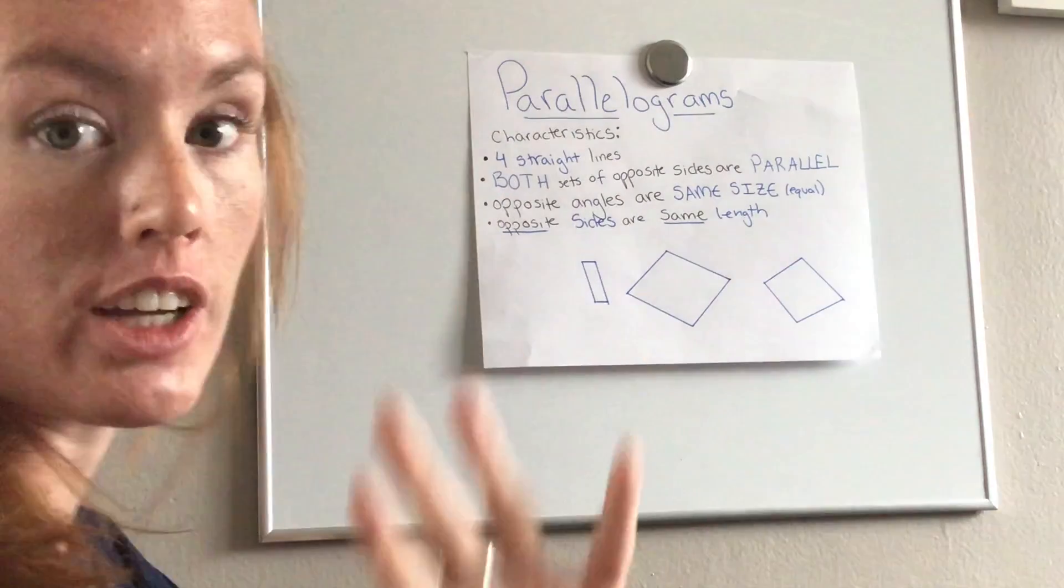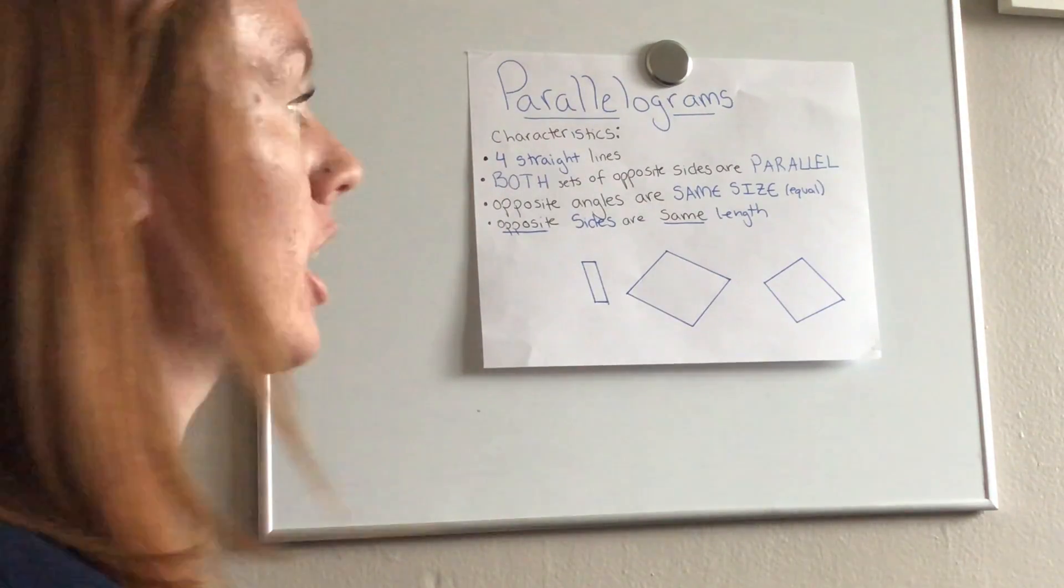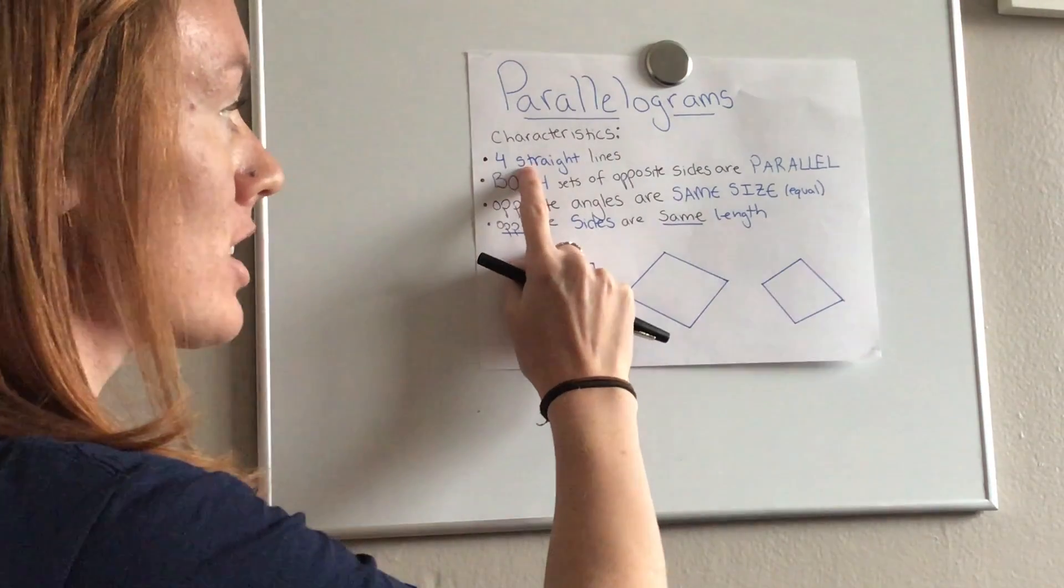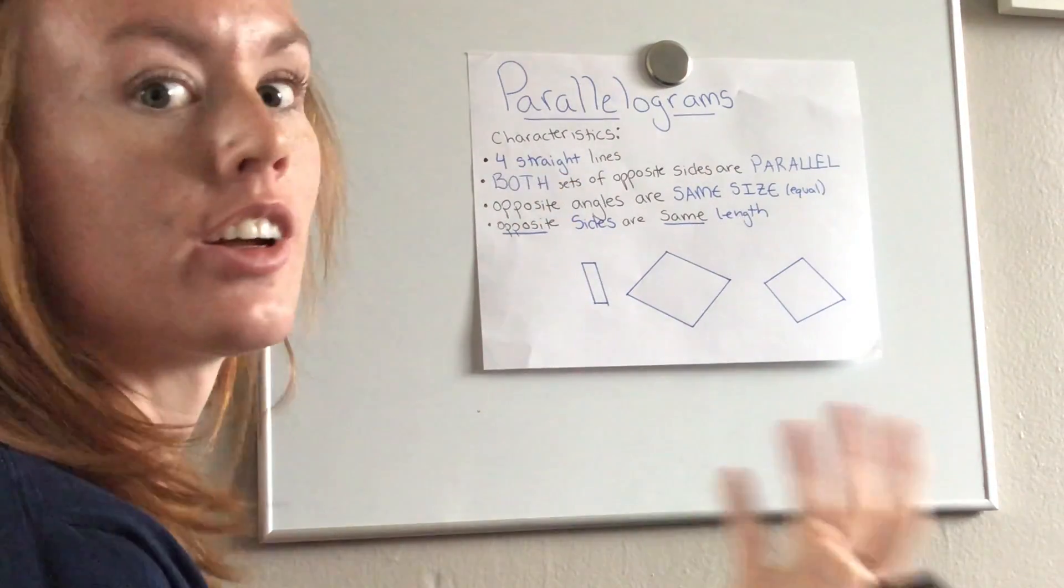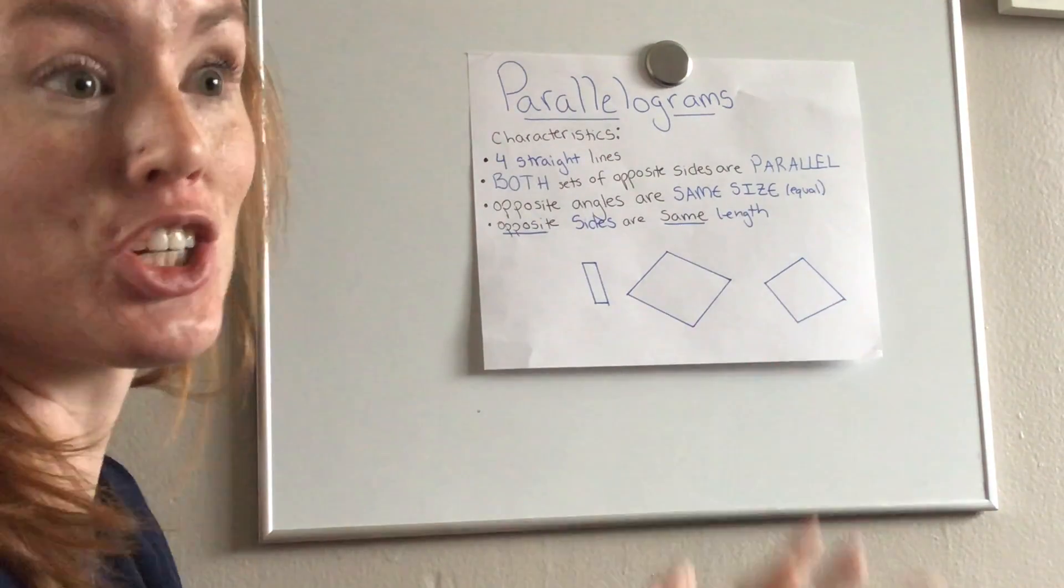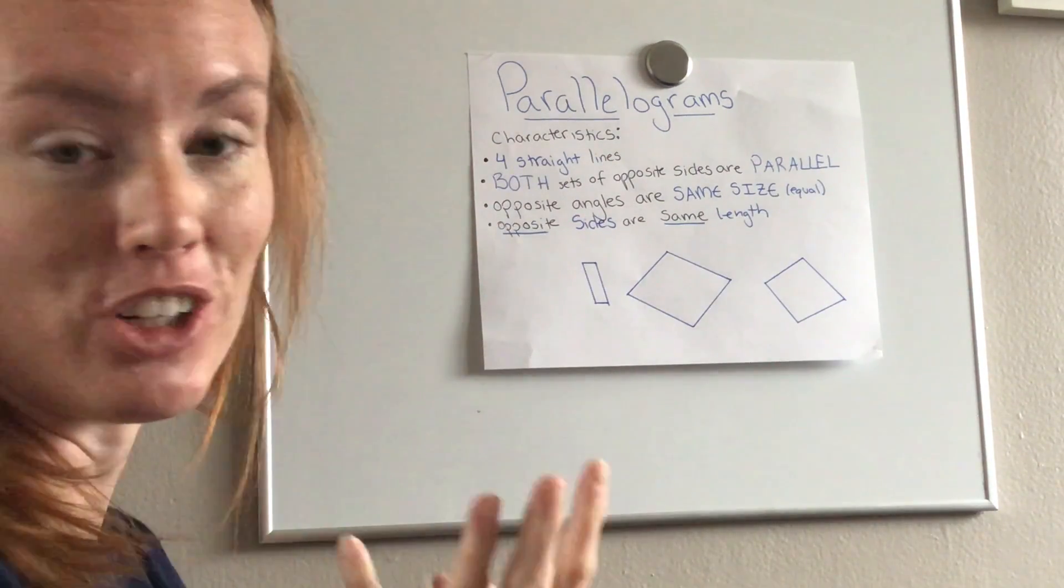There are four things we need to look at to determine if it is a parallelogram. Now it has to be four straight lines, it's a type of quadrilateral so it has to have the shape of a quadrilateral, meaning four lines.